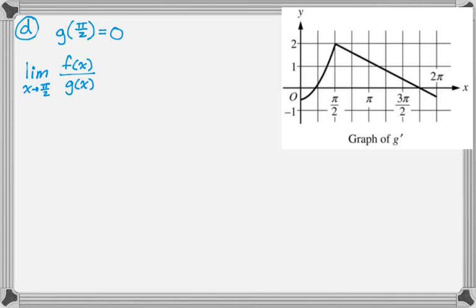So by direct substitution, f of pi over 2 is going to be e to the pi over 2 times cosine of pi over 2. But cosine of pi over 2 is 0. So here's f of x. Cosine of pi over 2 is 0, so that means we're getting 0 over 0, we were just explicitly told g of pi over 2 is 0. So as soon as you get 0 over 0, you want to use L'Hôpital's rule.